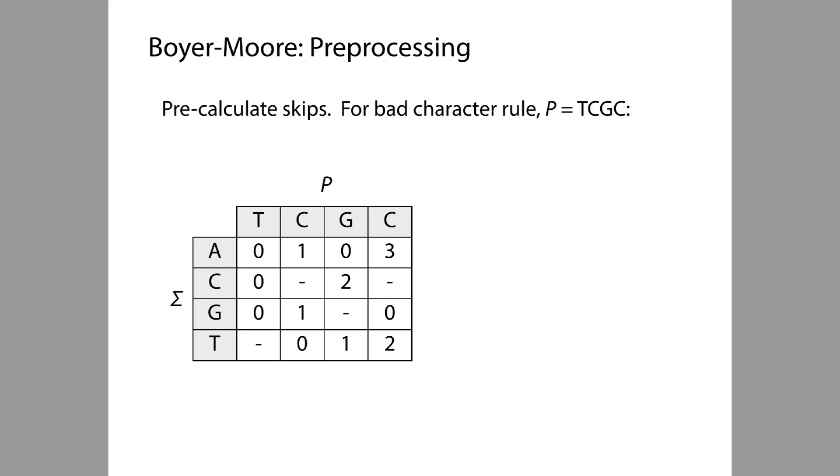So in the examples we've worked through so far, we've been figuring out how far we can skip sort of by eye, by looking at the pattern P and by thinking about the matched or the mismatched characters in the text T.